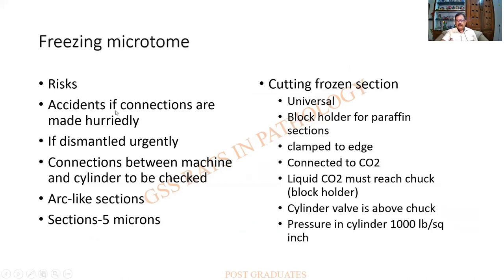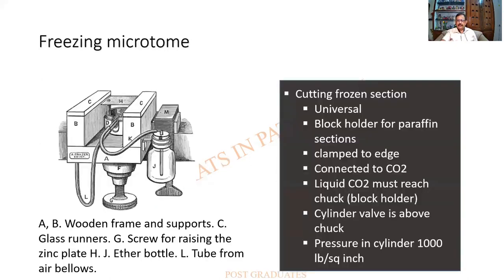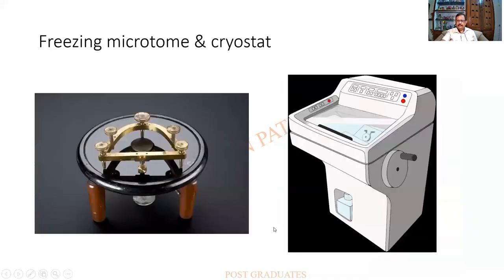The risks with the freezing microtome include accidents — not by mechanical cutting, but from the gas cylinders, which can cause great damage. Sections will be thicker than 5 microns. The instrument should not be dismantled in a hurry; great care should be taken after the procedure. Parts include a wooden framework, a block holder, a carbon dioxide cylinder with a tube, and the knife.